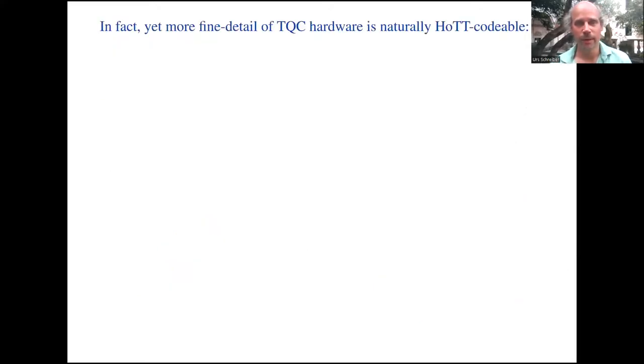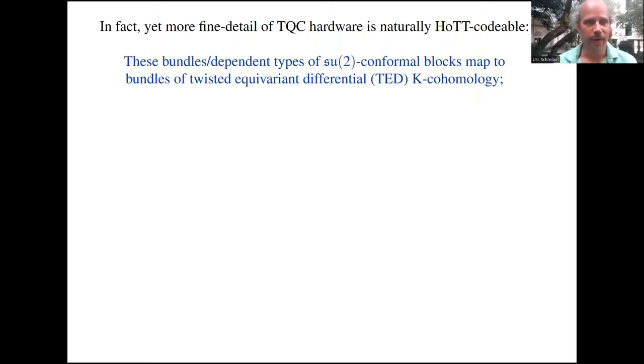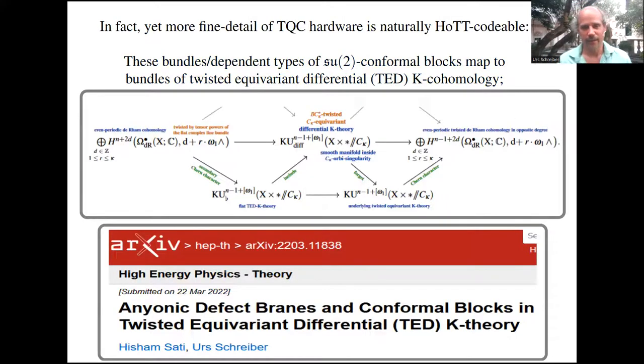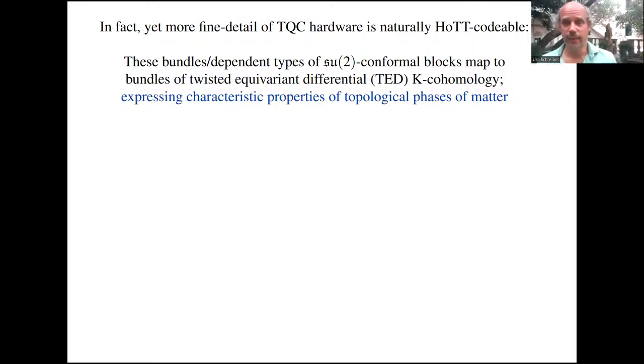In fact, there's much more we can encode about topological quantum computing hardware with such homotopy type theoretic languages. These bundles, dependent types of SU(2) conformal blocks, actually map into something much richer, what we call twisted equivariant differential K-cohomology. This is a refinement of ordinary cohomology, which we abbreviate to TED-K, and that brings me to the title of my talk. This is what got us started. We were trying to understand certain branes in string theory and noticed these branes are described by certain K-theory groups whose Chern character suddenly includes these conformal blocks.